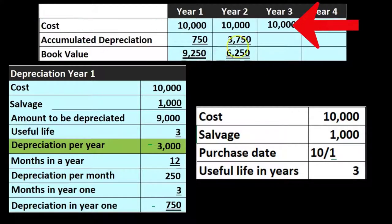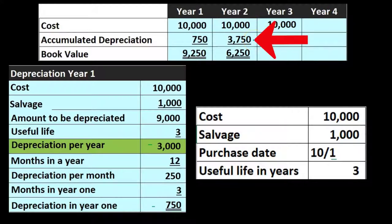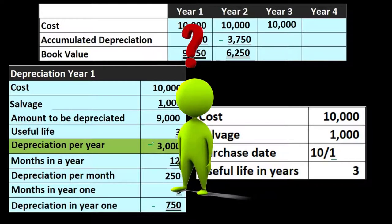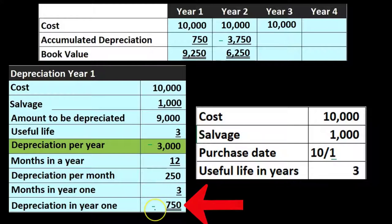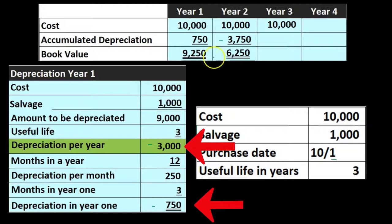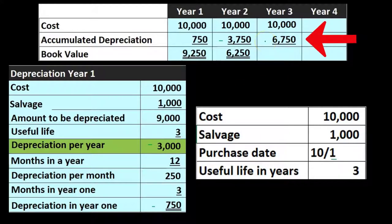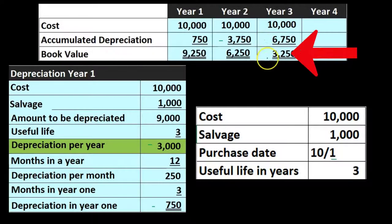In year 3, we have the same cost of $10,000. Accumulated depreciation is now the $3,750 from the prior year plus another $3,000. You can also think of it as adding up all the depreciation: $750 + $3,000 + $3,000 = $6,750. So $10,000 minus $6,750 leaves us with a book value of $3,250.